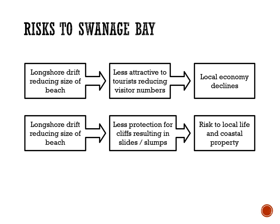The risks that exist to Swanage Bay are predominantly based around longshore drift — the movement of material from the south of the bay to the north of the bay and away from the bay, by waves which are refracted around the coastline to the south. Longshore drift reduces the size of the beach, making it less attractive to tourists, which would reduce visitor numbers and cause the local economy to decline. It also results in less protection for cliffs, leading to slides and slumps — what we call mass movement — creating a serious risk to local life and coastal property, particularly during storms.